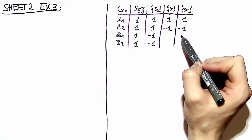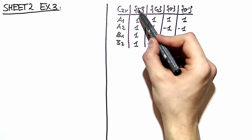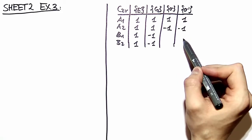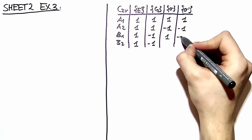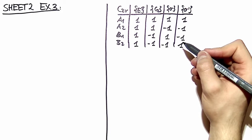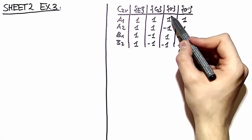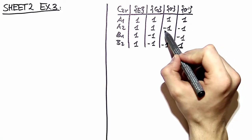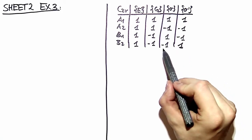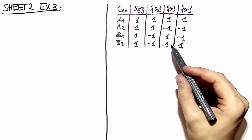Next we're going to look at these two representations using column orthogonality. This means the number of elements in the conjugacy class times its character must be zero when summed over the whole irreducible representation. We have two ways to satisfy this: we can write minus one here and one there, or exactly the other way around. Let's check row orthogonality again: one times one is one, plus minus one times minus one is two, plus one times minus one is one — and we have a correct character table for C2V.